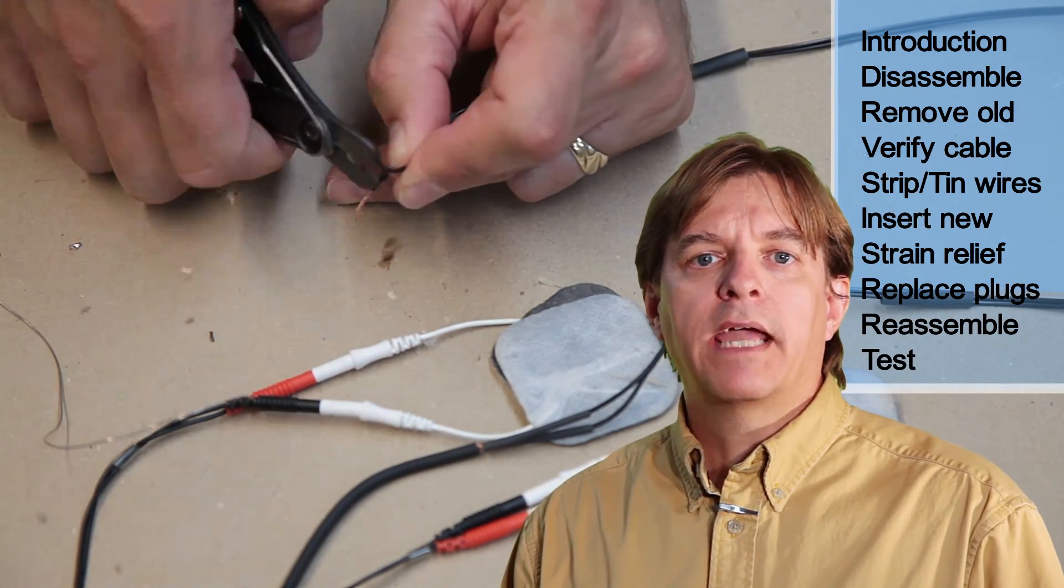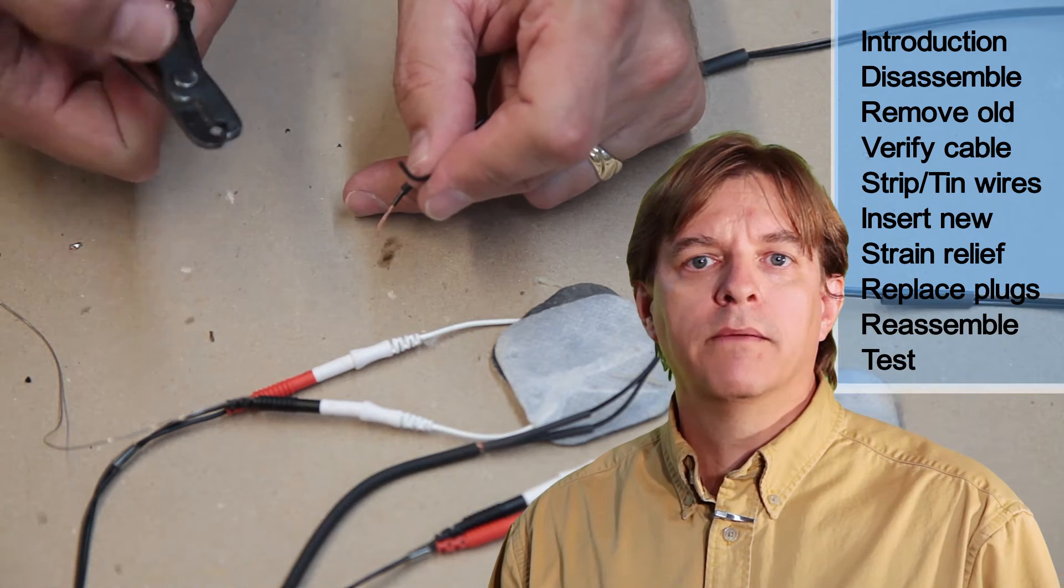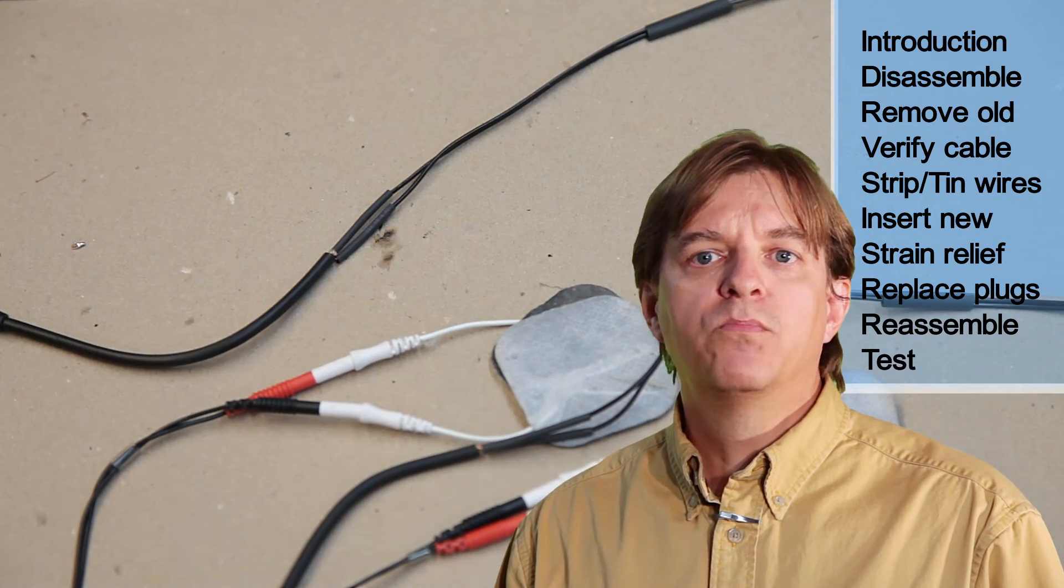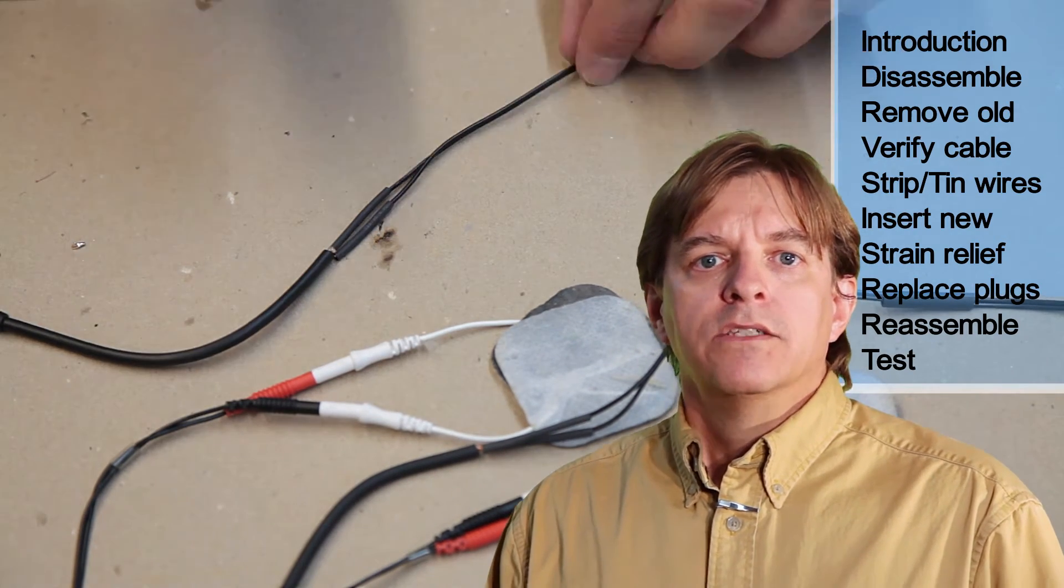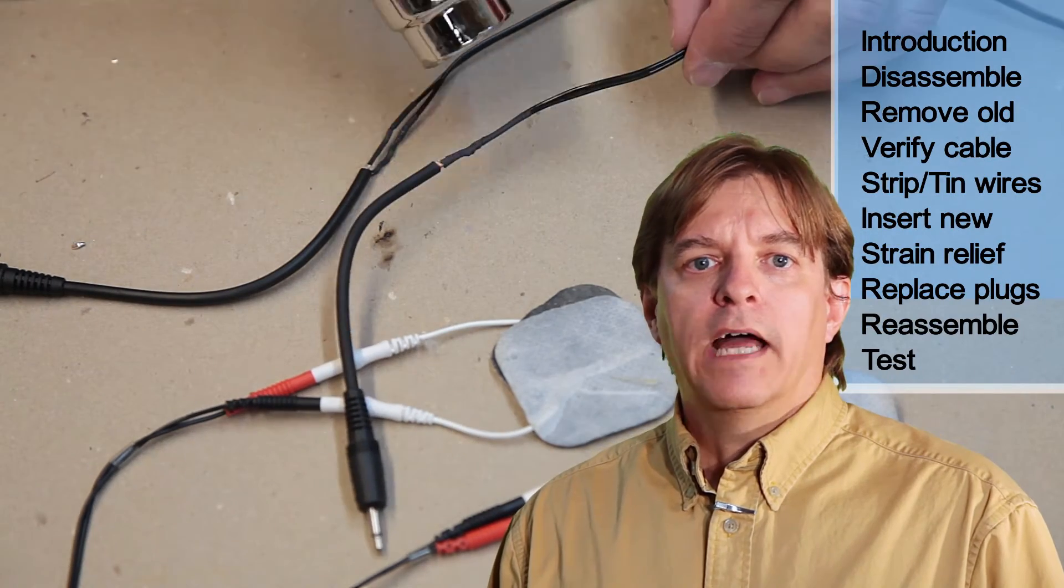Generally, I like to make a mechanical connection before soldering. But this particular wire was too brittle to bend well. So I used the solder as both mechanical and electrical connection.